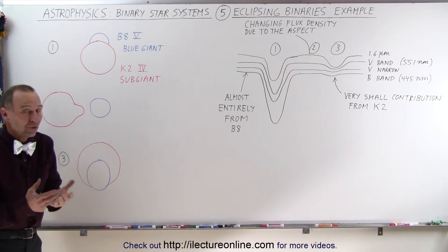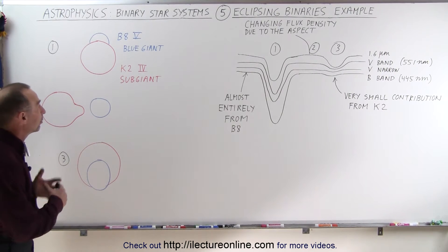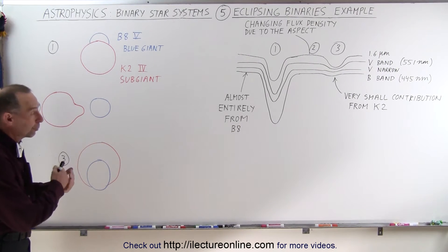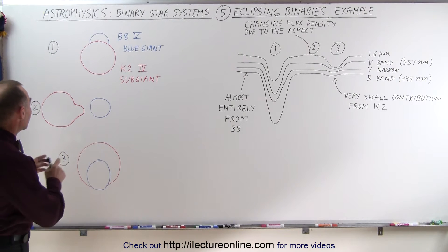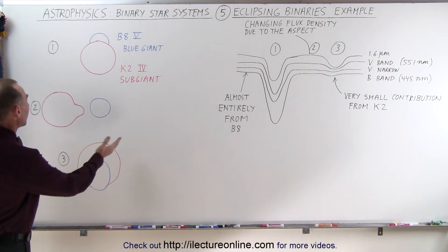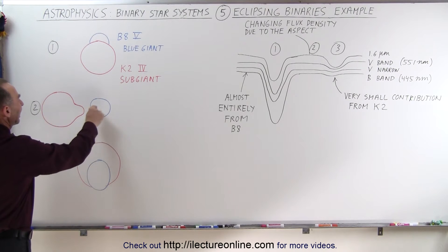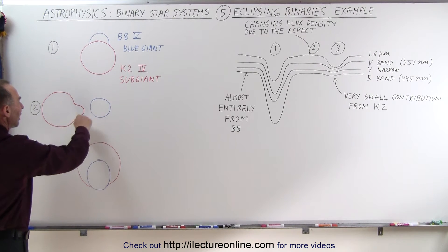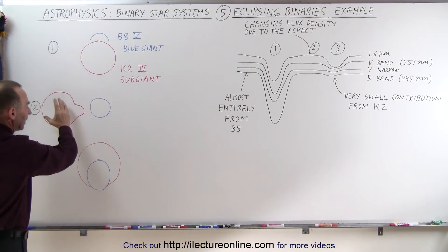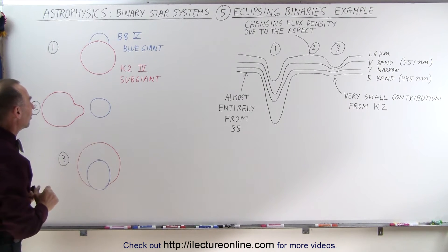Notice the subgiant is larger in size but the blue giant will give off a lot more light. Also notice that when you see the red subgiant next to the blue giant, there is a portion of the star that is gravitationally being pulled towards the blue giant.